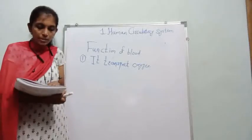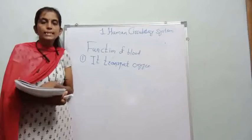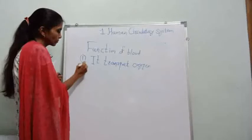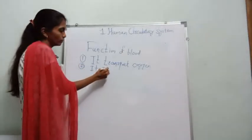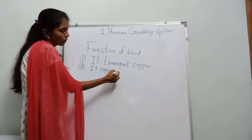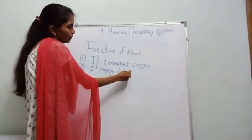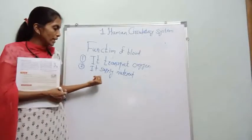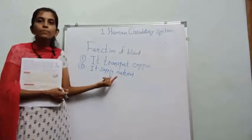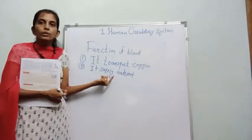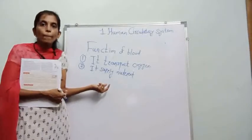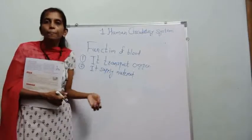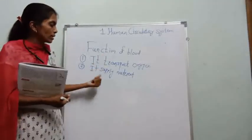The second function is that blood supplies important nutrients to all the cells. The plasma component of blood is helpful in supplying these nutrients throughout the body.